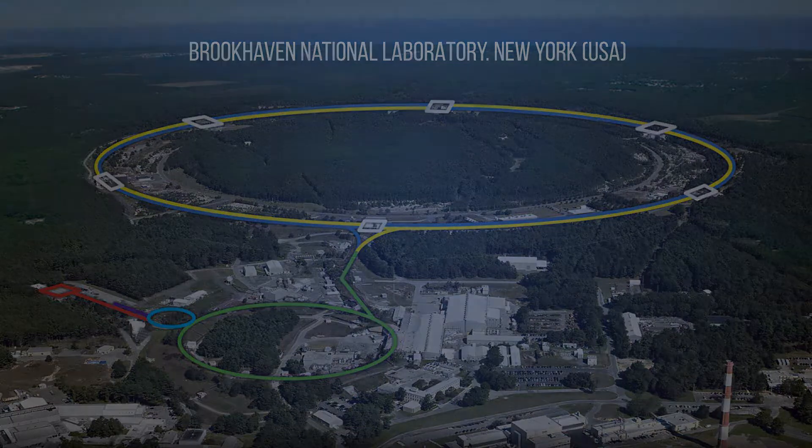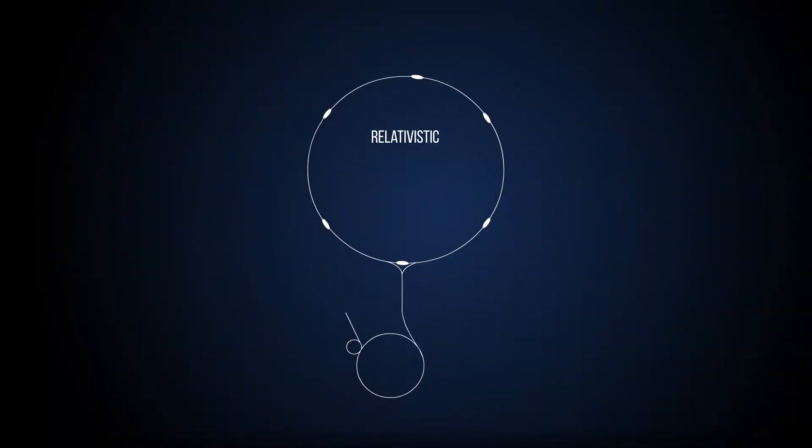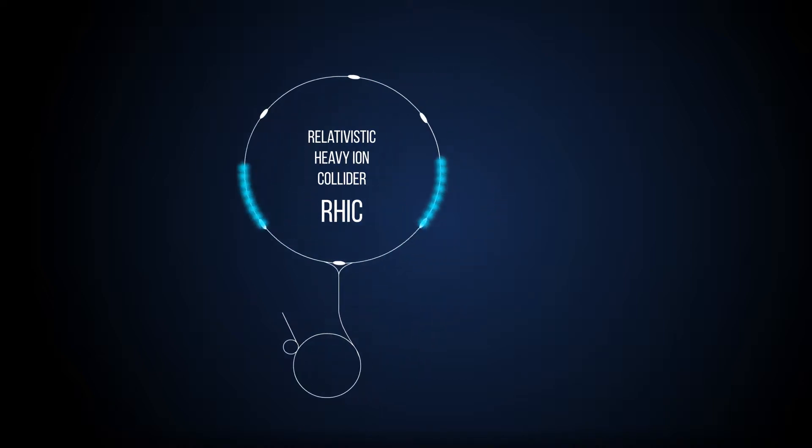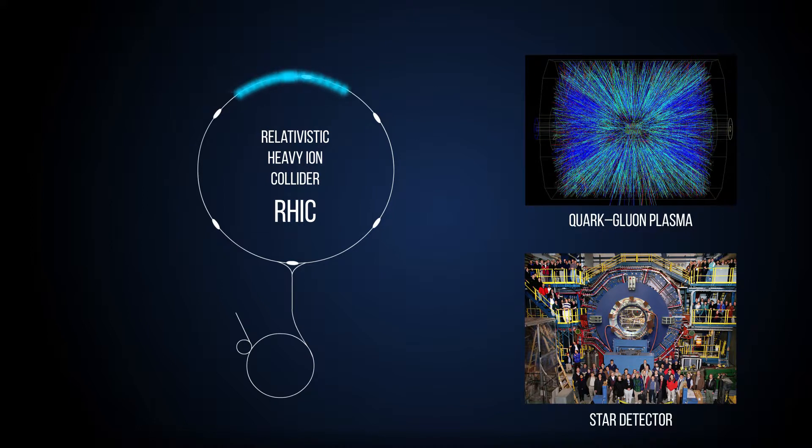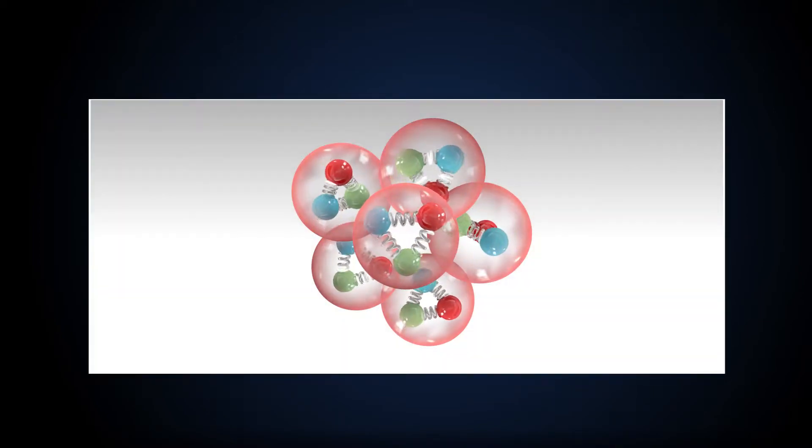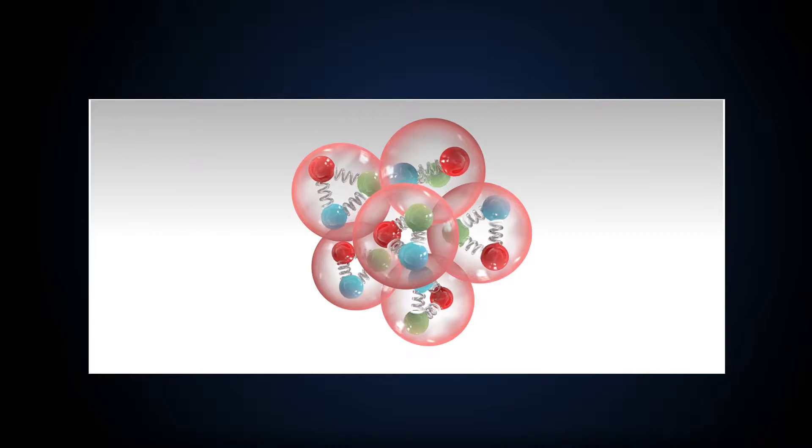The RHIC Collider at the Brookhaven National Laboratory is a unique superconducting collider with a perimeter of 4 kilometers, a facility that allows colliding beams of heavy nuclei, for example, gold nuclei, with a total energy of 200 billion electron volts. In these collisions, it is possible to reach such a temperature of colliding particles that protons and neutrons actually melt, and scientists can investigate the liquid of free quarks and gluons.